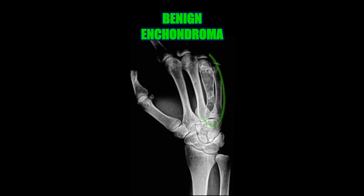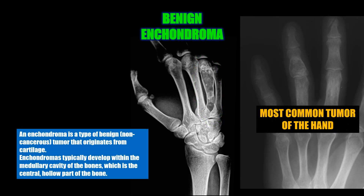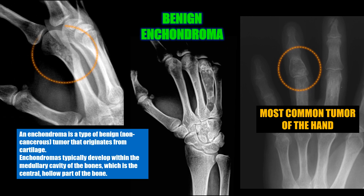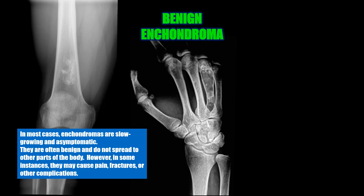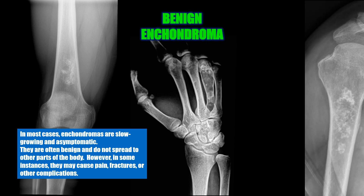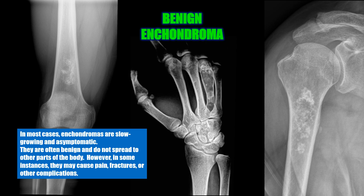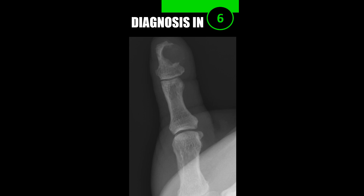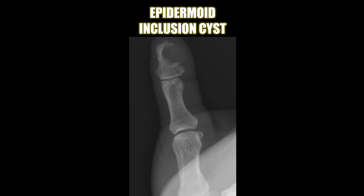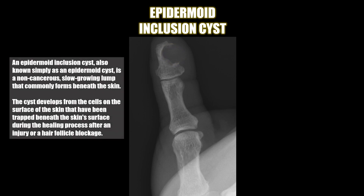Case number three is a benign enchondroma of the fourth metacarpal. An enchondroma is a type of benign tumor that originates from the cartilage and it is the most common tumor of the hand. Enchondromas typically develop within the medullary cavities of the bone, which is the central hollow part of the bone. In most cases, enchondromas are slow growing and asymptomatic, often benign, and do not spread to other parts of the body. However, in some instances they may cause pain, fractures, or other complications.